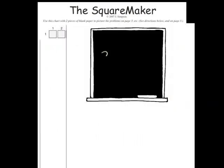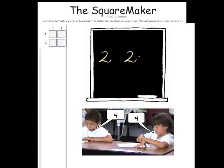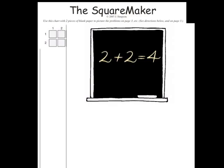You write two on the board. Ask them to move one of the blank papers down to show two rows of two, and write a second two on the board. How many boxes are there altogether? Write equals four on the board as they tell you. Ask them what math sign should go between the twos — it could be adding or multiplying at this point. The next problems will clarify which way we're going.